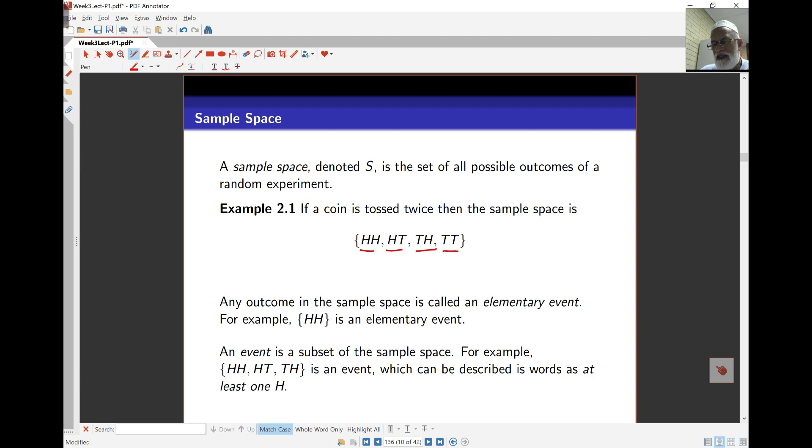That is the sample space. Any element of the sample space, or any particular outcome, is called an elementary event. Any event is just any subset of this sample space. For example, an elementary event here is heads and heads. Anything else will still involve two outcomes.